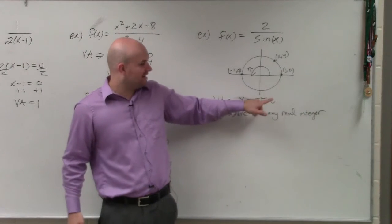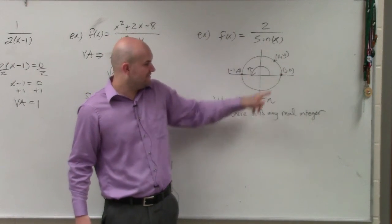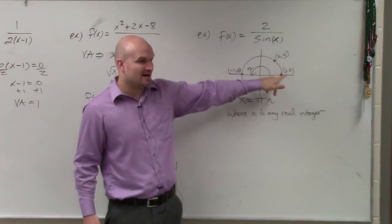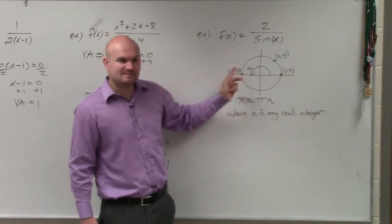So if you think about that, because if n is 0, we have that as 0. If n is 1, we have pi. If n is 2, we have 2 pi. If n is 3, we have 3 pi. It keeps on going.